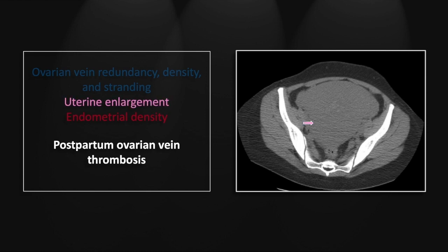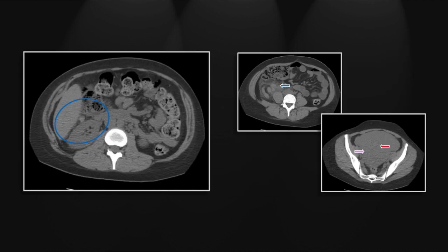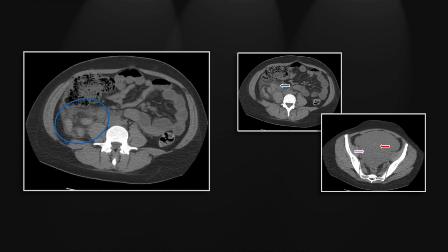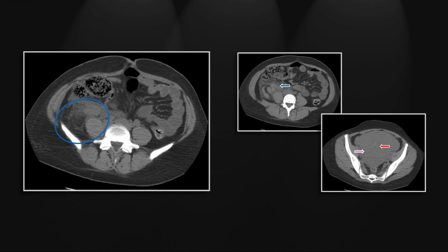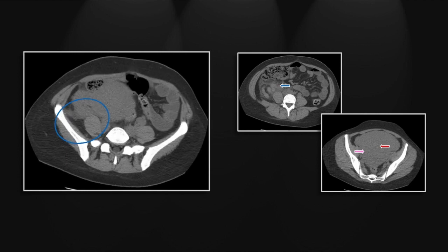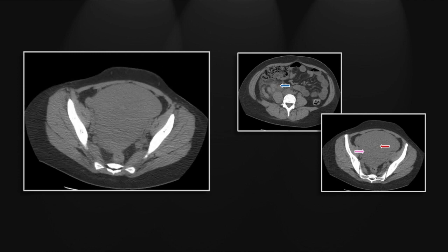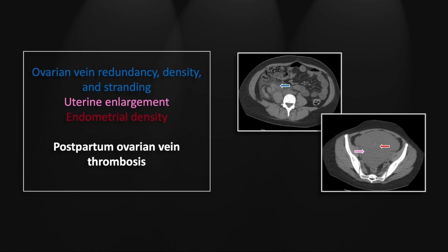You see here a postpartum uterus with marked uterine enlargement and a tiny bit of hyperdense debris or clot within the endometrial cavity. On the video, you can really appreciate the redundant, tubular, hyperdense ovarian vein coursing throughout the right aspect of the abdomen and running down to the right ovary. That is a postpartum ovarian vein thrombosis, a relatively frequent complication of the postpartum state.